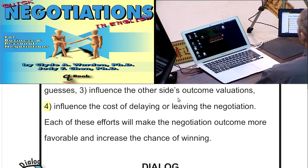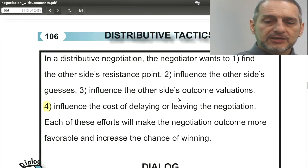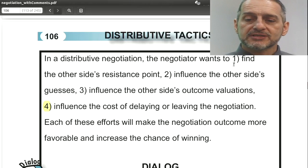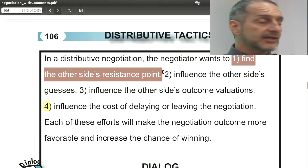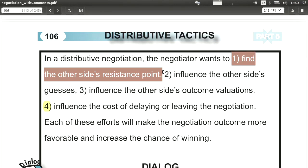So how can we do this? One tactic is to find out what the other side's resistance point is. You want to keep your own information secret, but you want to get the other side's secret information. What is their resistance point — their highest price or lowest price, depending on whether they're a buyer or seller — and not just prices, but other things too, though we often focus on price.